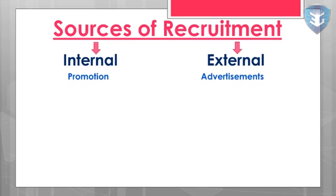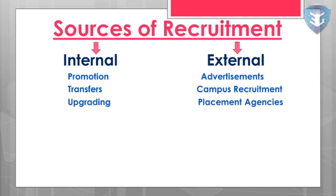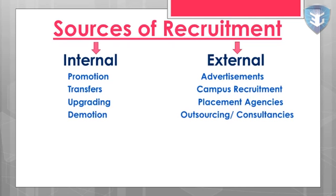External sources include advertisement — giving advertisements in newspapers, television or websites to recruit candidates from outside. Campus recruitment is another external source — various companies visit colleges and recruit candidates, offering good packages. External sources also include placement agencies — many companies contact placement agencies to fulfill job vacancies, and the agency provides suitable candidates.